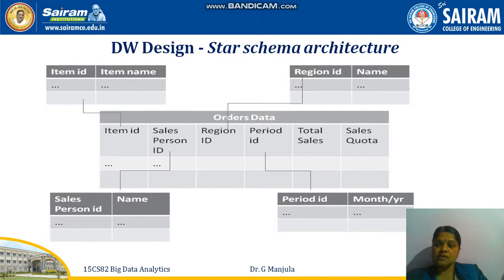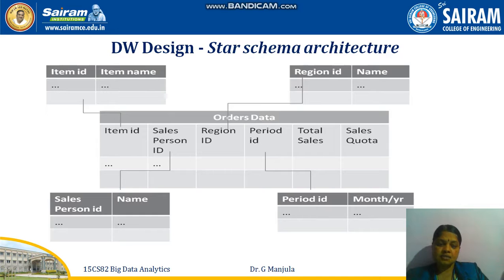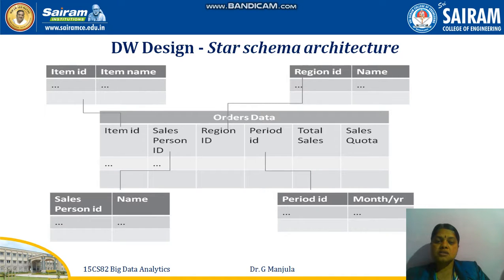This is a diagram you can see. By using a star schema architecture, we can see a central table called the orders data. For example, it contains item ID, salesperson ID, region ID, period area, total sales, and sales quota. This is called the central table.